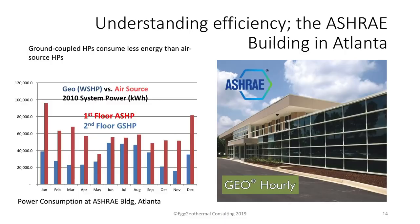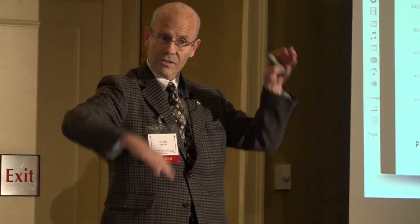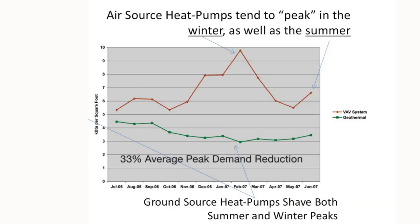Ground source heat pumps, as shown in the ASHRAE building in Atlanta, were installed on the first floor with air source heat pumps and the second floor with geothermal heat pumps. When it gets really cold outside, the air source heat pumps can do the job, but efficiency peaks out during that time. As you can see by the red and blue lines, the geothermal heat pump has an unfair advantage: the ground is the same temperature year-round, where air temperature fluctuates seasonally and changes the efficiency.